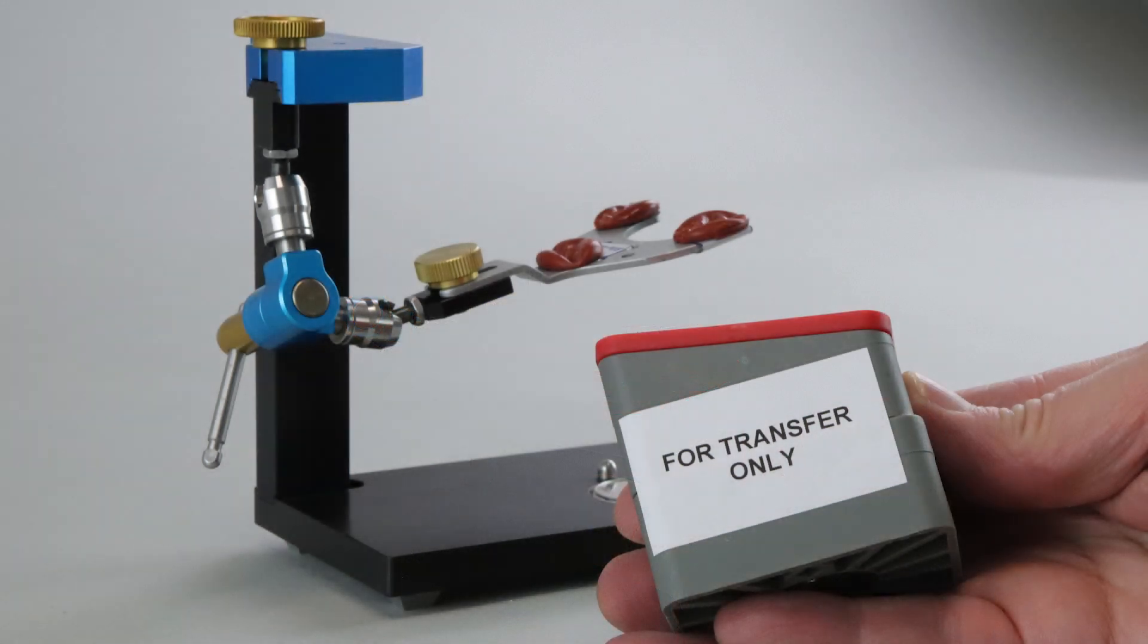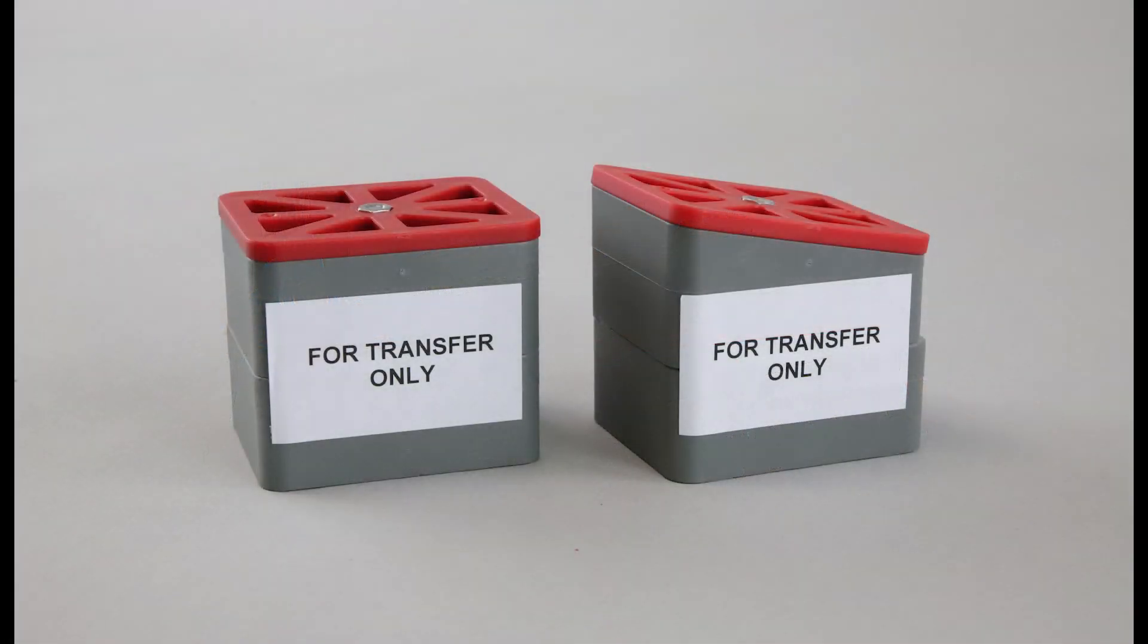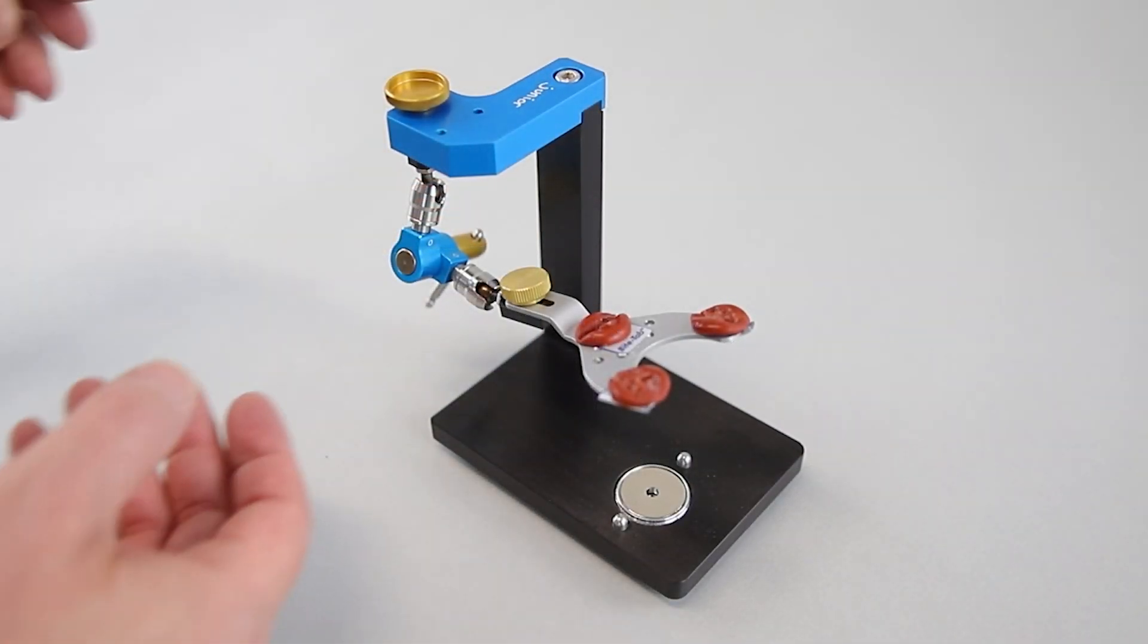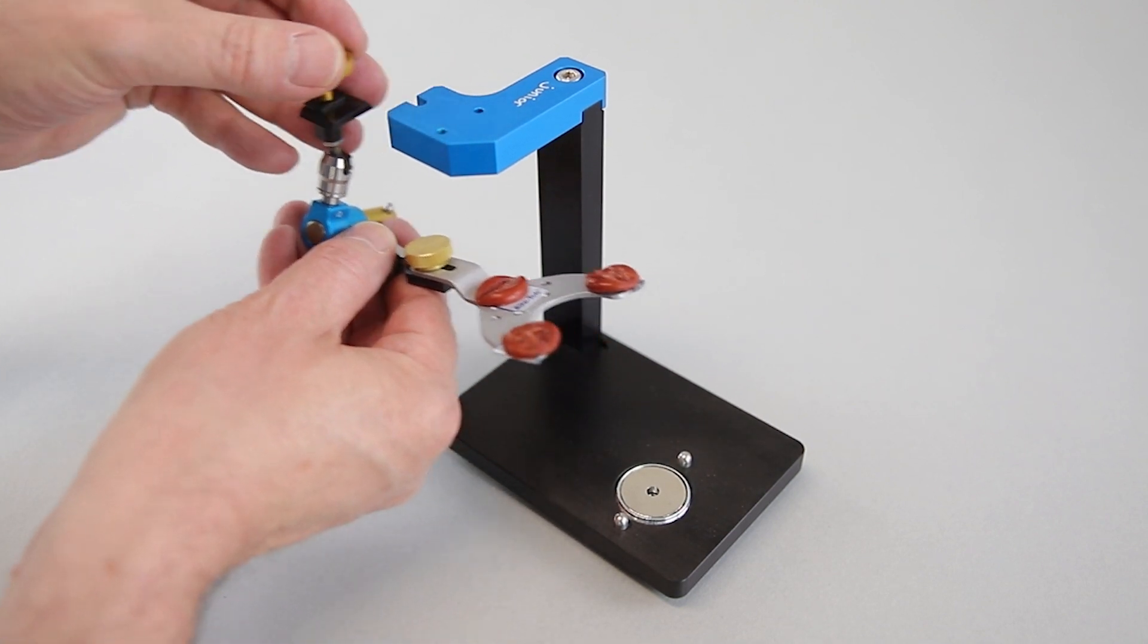In case the standard blocks are too small, you can use distance blocks which are used for transfer only. Remove the 3D joint support and fix the distance block into the Transfer Stand.